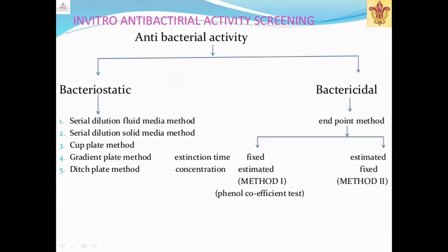In vitro antibacterial activity screening: antibacterial activity is divided into two types — bacteriostatic and bactericidal. The following methods are used to determine MIC and MBC. Method one is the serial dilution fluid method. Method two is the serial dilution solid media method. Then there is the cup plate method, gradient plate method, ditch plate method, and endpoint method. The endpoint method is further divided into two: fixed estimated method and estimated fixed concentration method.